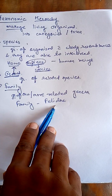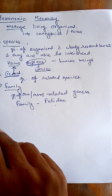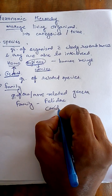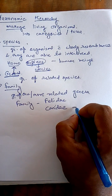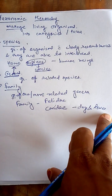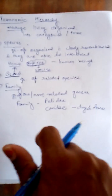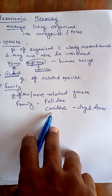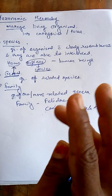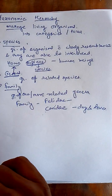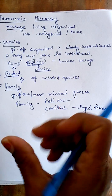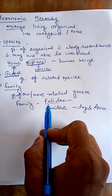Another family is Canidae, which includes dogs and fox. On the basis of certain common characters, we make a group and include them in a single family — either Felidae or Canidae. There are many such types of families, but here we are taking only these two examples which are familiar to you, because from both families you know the domesticated animals as well as the wild animals.